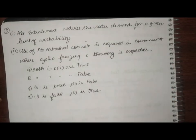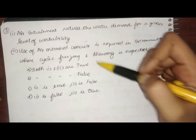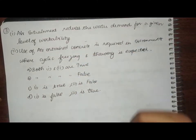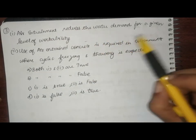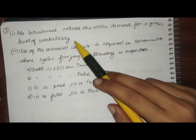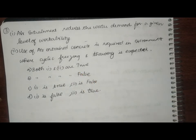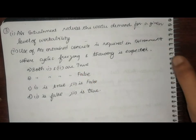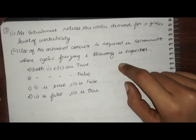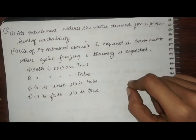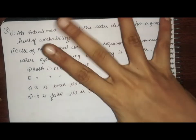For the third question, I want you to solve it and comment your answers. The two statements are: (1) Air entrainment reduces the water demand for a given level of workability; (2) Use of air entrained concrete is required in environments where cyclic freezing and thawing is expected. Find which is true and which is false, and let me know in the comments below. Thank you so much for watching — see you in the next video, bye bye!